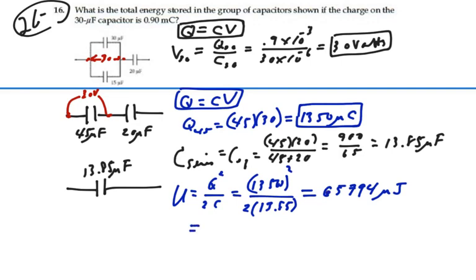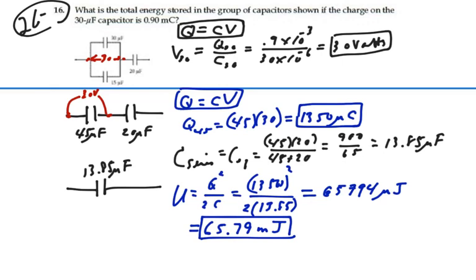Written as millijoules, this is 65.79 millijoules. That is the energy stored in the equivalent capacitance, and since the equivalent capacitance represents the whole network, that is also the energy stored in the whole group of capacitors. If we had calculated them individually, they would all add up to 65.79 millijoules — so that is our answer for this problem.